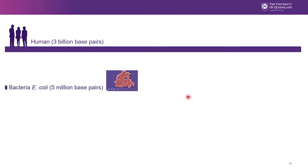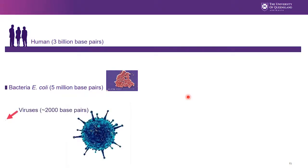A human cell packs those 3 billion base pairs into each and every cell, apart from red blood cells. Bacteria, being microscopic and incredibly small, only have about 5 million base pairs. What about viruses? We suggested that viruses might be non-living. They do, however, have some characteristics that might appear living, including carrying genetic material. But how they use that genetic material is remarkably different. Your typical virus is only about 2,000 base pairs.